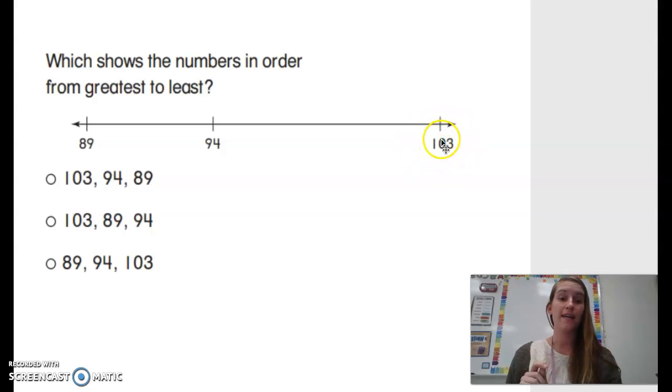Greatest to least. Well, the greatest number is 103, then comes 94, then comes 89. So let's see which answer starts with 103. Can't be this one. Then 94 comes next.